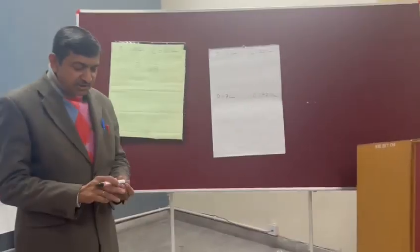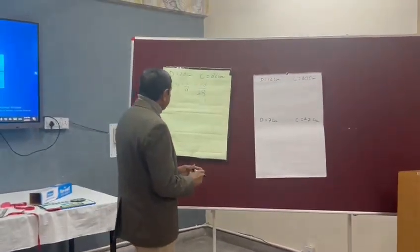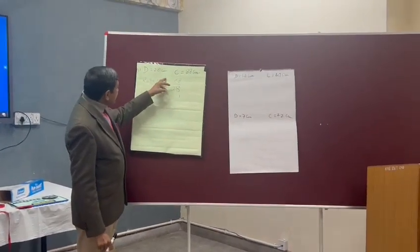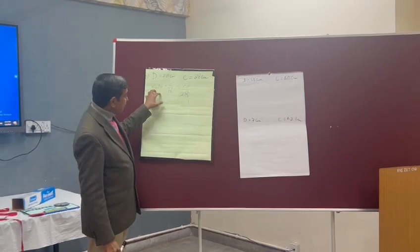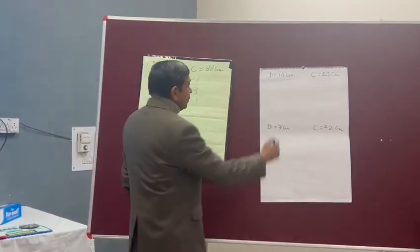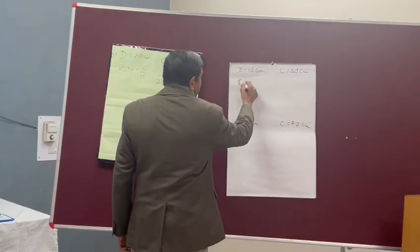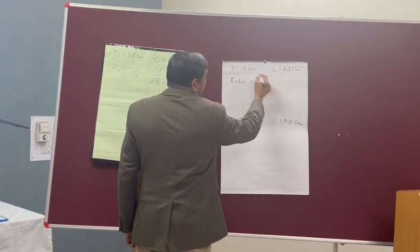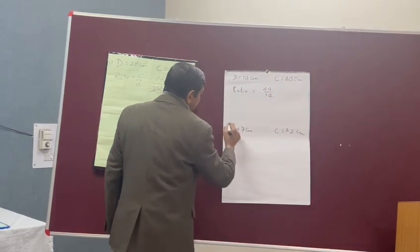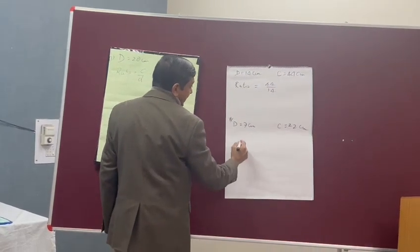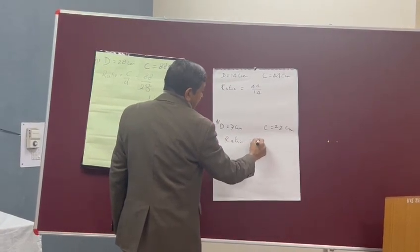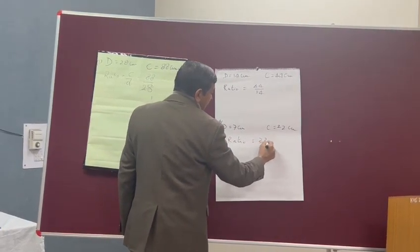Now, see, dear participants — when Meenakshi put here circumference and diameter in the form of ratios, it is eighty-eight upon twenty-eight. When we frame the ratio of Ravindar Sir, how much is it? Forty-four upon fourteen. And Bhupinder Sir's ratio? Twenty-two upon seven.